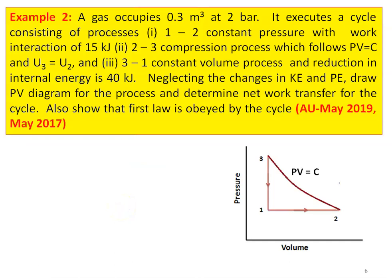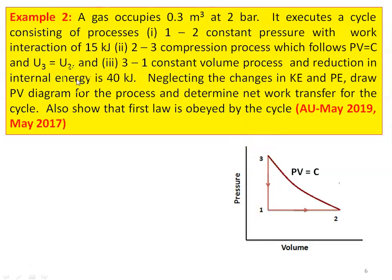Problem number 2 is from the Anna University question paper May 2019 and May 2017 — a similar problem with different data. The gas occupies 0.3 m³ at 2 bar and executes a cycle consisting of: 1 to 2 constant pressure process with work interaction 15 kJ; 2 to 3 compression following PV = constant where U2 = U3; and 3 to 1 constant volume process. Reduction in internal energy is −40 kJ. Neglecting kinetic and potential energy changes, draw the PV diagram and determine net work transfer for the cycle. Also show that the first law is obeyed.